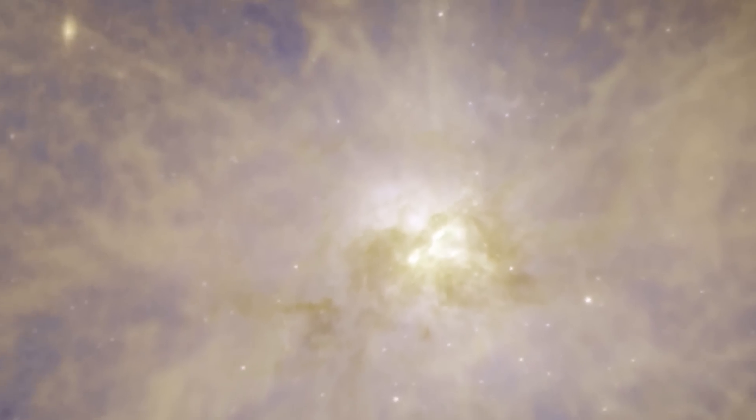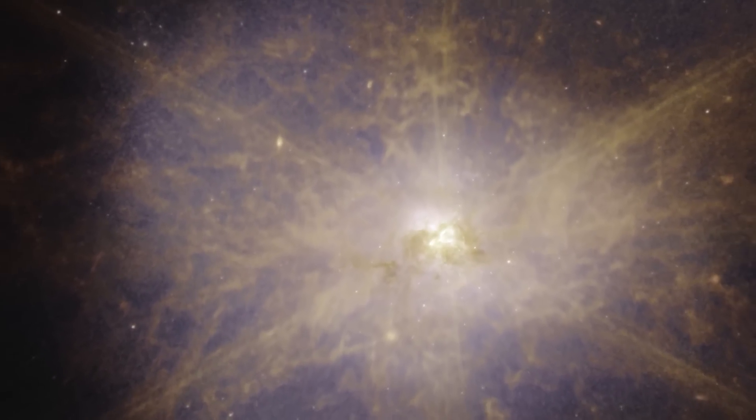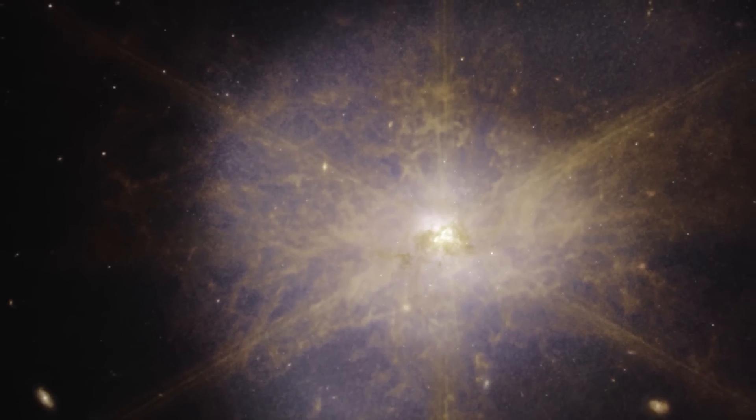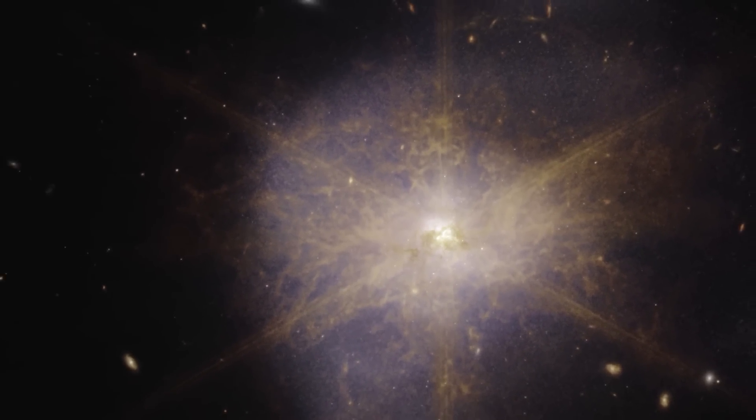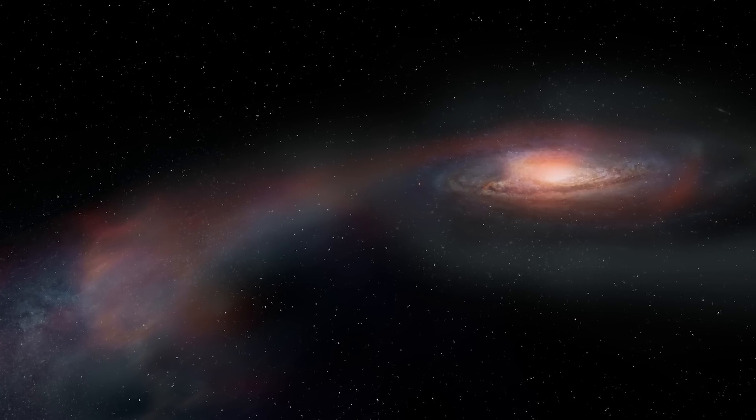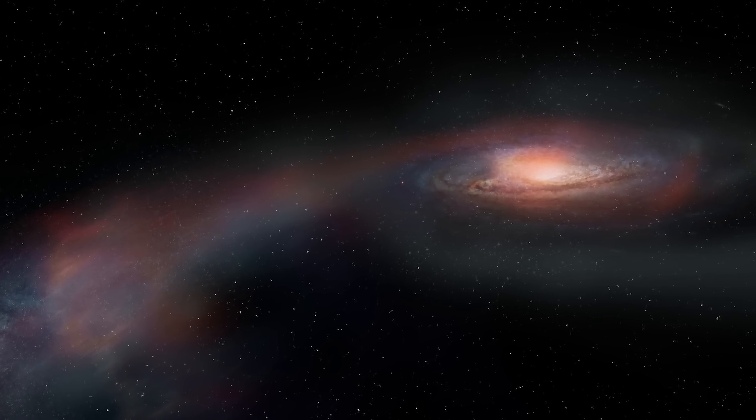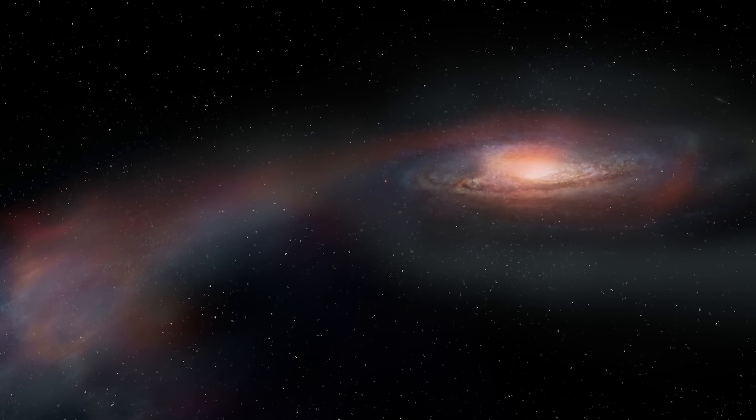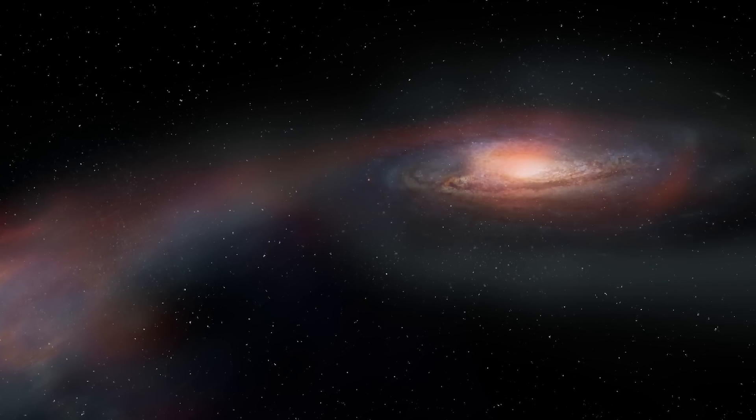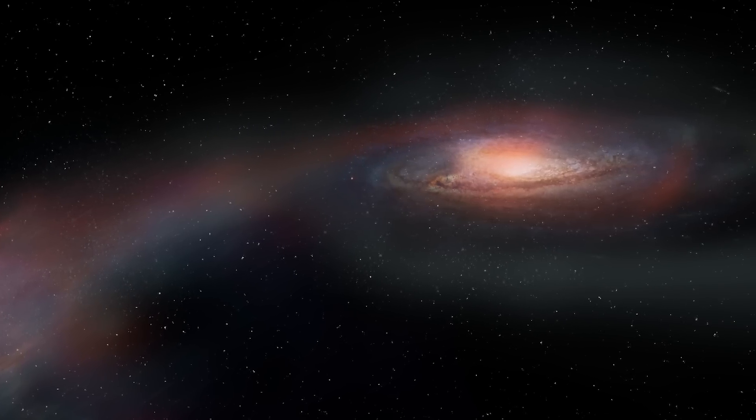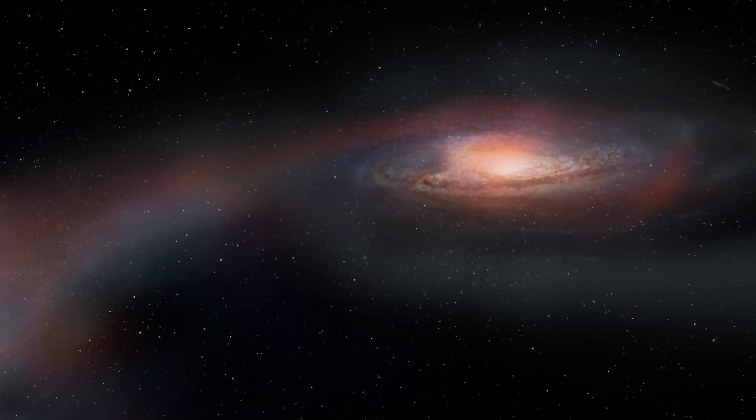As we journey from the heart of ARP-220 to its outskirts, we encounter one of the most visually compelling signs of the ongoing merger, the Tidal Tails. These are elongated streams of stars, gas, and dust that have been gravitationally stripped from the colliding galaxies and flung out into space, creating extended arcs that trace the galaxy's orbital paths.